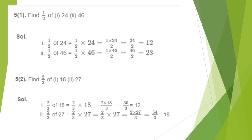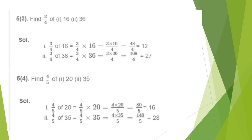Next question: 2/3 of 27. Instead of 'of' we write the multiplication symbol, so we get 2/3 × 27. Multiplying the numerator with the whole number and keeping the same denominator: 2 × 27 ÷ 3 = 54/3. Since 3 is common in numerator and denominator, cancelling gives the answer as 18. So 2/3 of 27 is 18.